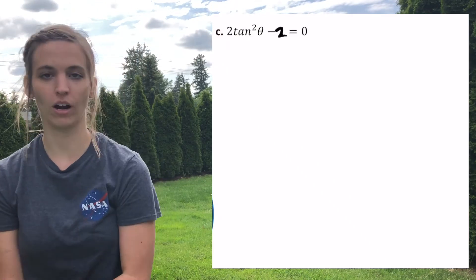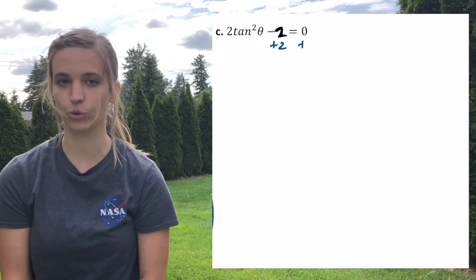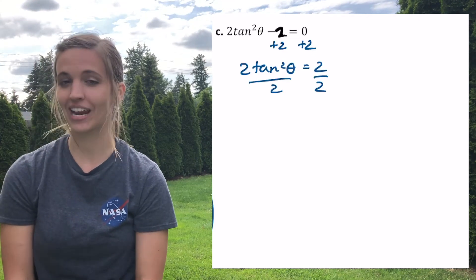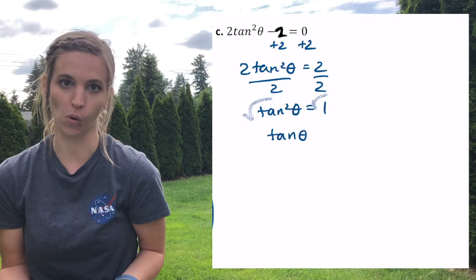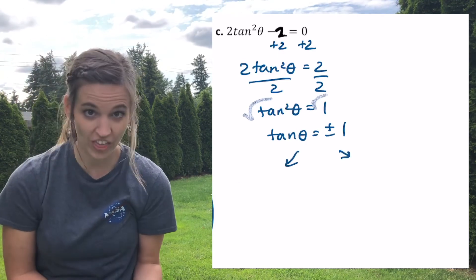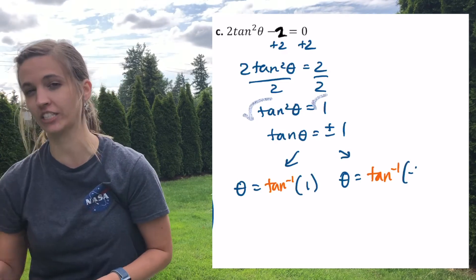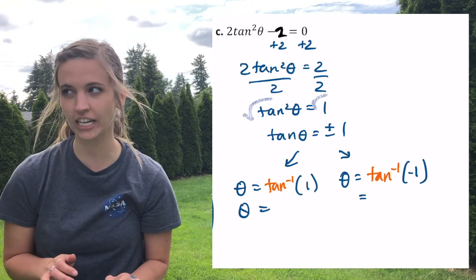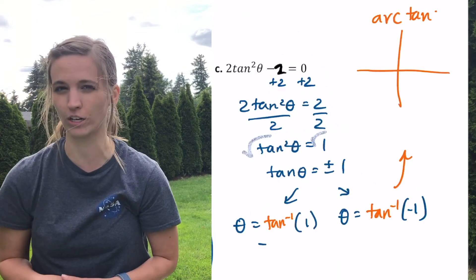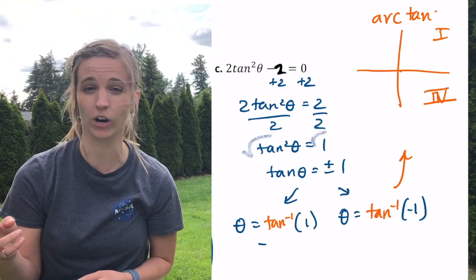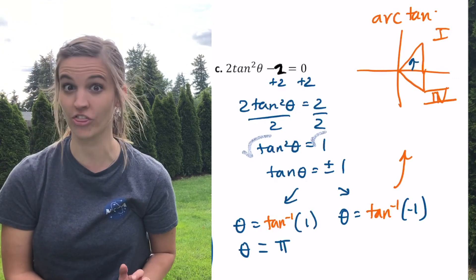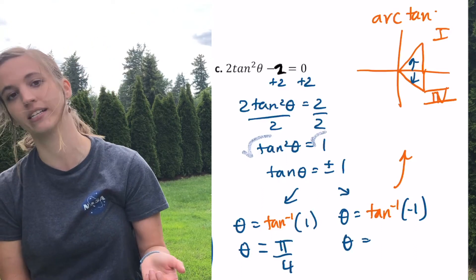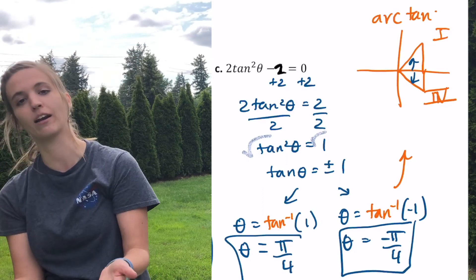Now let's take a look at tangent. 2 tangent squared theta minus 2 equals 0. Add the 2 and divide off the 2 in front: tangent squared theta equals 1. Square root both sides: tangent theta equals plus or minus 1. Use arc tangent: theta equals arc tangent of 1 and arc tangent of negative 1. Looking at quadrants 1 and 4 — tangent equals 1 at pi over 4, and in the fourth quadrant, negative pi over 4. So theta equals pi over 4 and negative pi over 4.